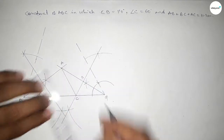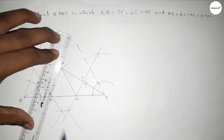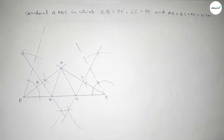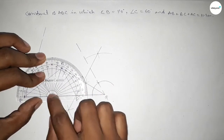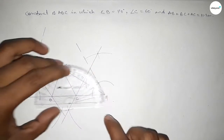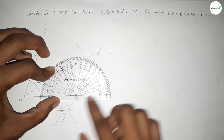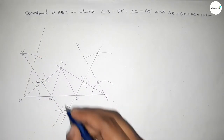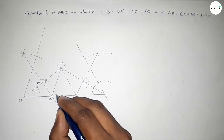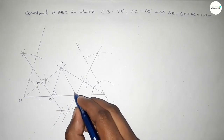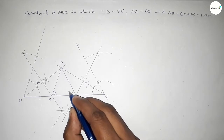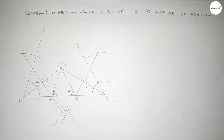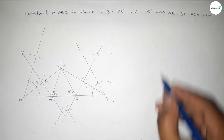Joining A and C and joining A and B. Now checking the angle B — this is perfectly 70 degrees. And checking angle C — this is perfectly a 60 degree angle. So angle B equals 70 degrees and angle C equals 60 degrees. We got triangle ABC.